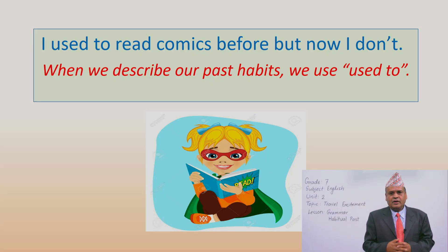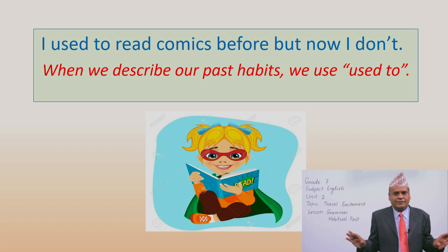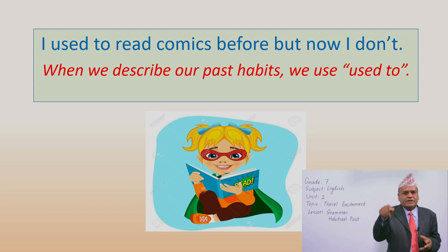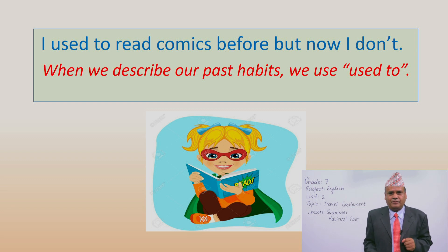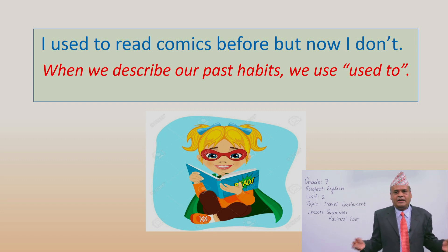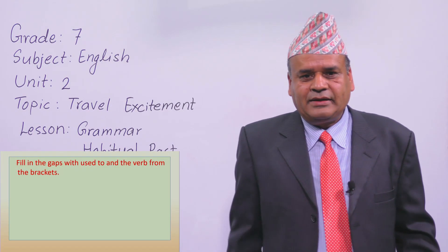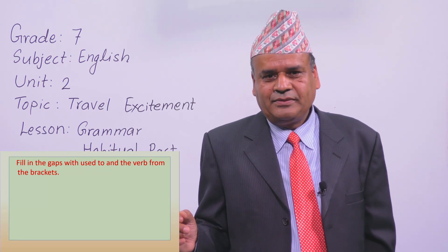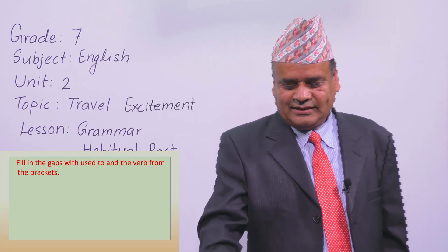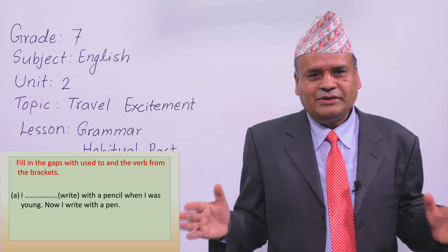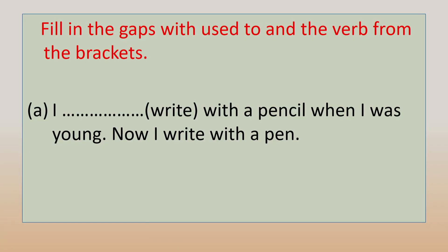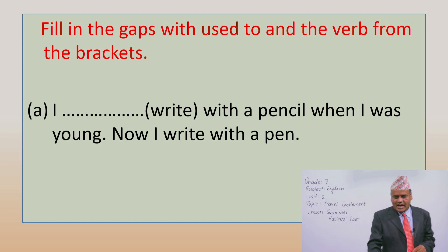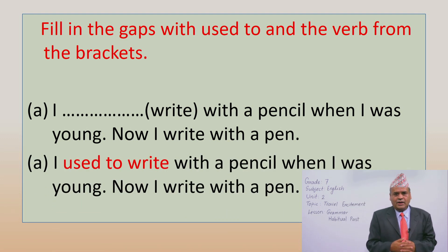I used to read comics before, but now I don't. That means I don't like to read comics anymore. When we describe our past habits, we use 'used to'. Now you are going to fill in the gaps with 'used to' from the brackets on page number 19. In number A: I write with a pencil when I was young — this is past habit, so: I used to write with a pencil when I was young. Now I write with a pen.